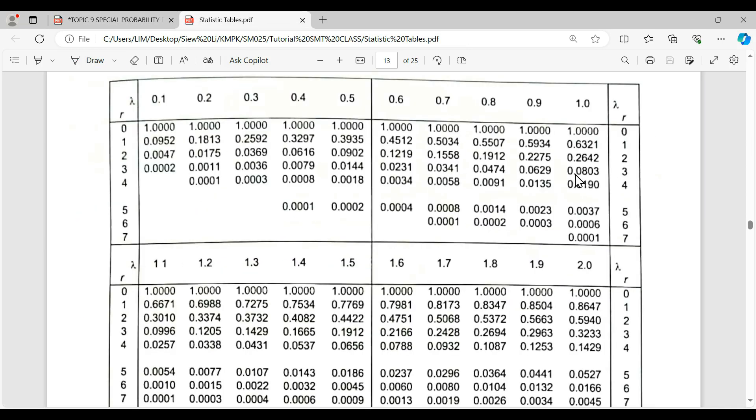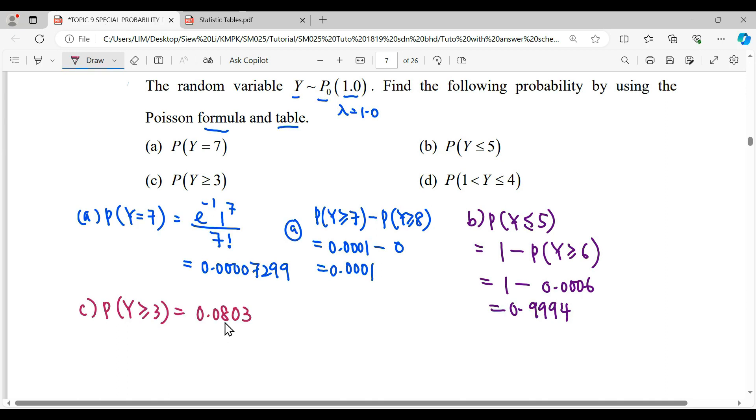For question (d), probability of 1 less than Y and less than 4. In other words, the random variable is between 1 and 4. When you want to read the table, we will start with more than or equal. You can see 1 is not included, so we cannot read more than or equal to 1. We have to exclude 1. The next number will be more than or equal to 2.